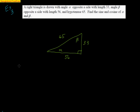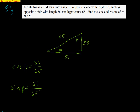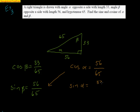Now let's find sine and cosine of alpha and beta. Cosine of beta: the adjacent is 33 and the hypotenuse is 65, so cosine of beta = 33/65. Sine of beta: the opposite is 56 and the hypotenuse is 65, so sine of beta = 56/65. Cosine of alpha: the adjacent is 56 and the hypotenuse is 65, so cosine of alpha = 56/65. Sine of alpha: the opposite is 33 and the hypotenuse is 65, so sine of alpha = 33/65. If any fractions can be reduced, please do so.